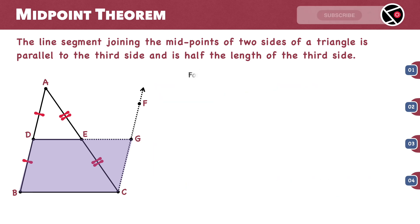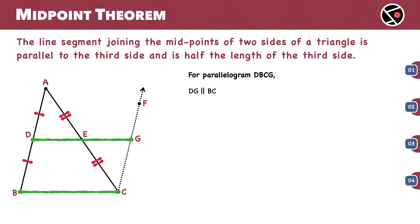Let's look further into this parallelogram. In this parallelogram, DG is parallel to BC. So, DE must be parallel to BC. With this we have proven that the line segment joining the midpoints of two sides of a triangle is parallel to the third side.